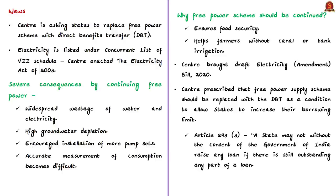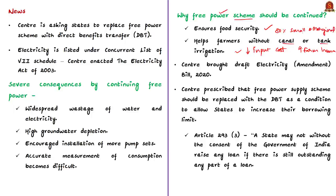On the other hand, there are valid reasons to continue the free power scheme to farmers. Farmers not covered by canal or tank irrigation should be given free electricity to ensure food security for the growing population. Free power to farmers reduces input cost and can be one of the tools available to double farmers' income and provide remunerative prices. Importantly, about 80% of our farmers are small and marginal farmers, which justifies continuing the free power scheme.